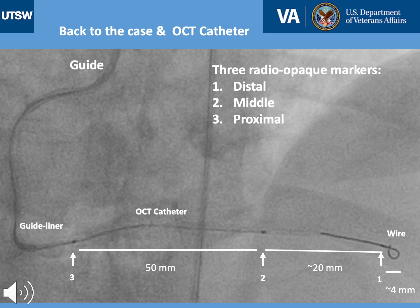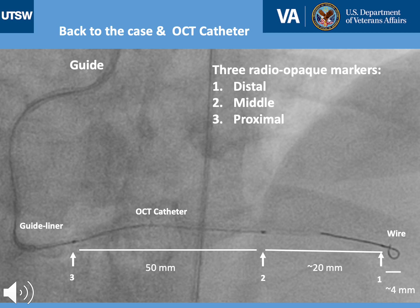Back to our patient: you can see the guide as the most proximal catheter, then the guide liner in the mid-distal RCA, and then the OCT catheter in the distal RCA into the PDA with the guidewire in the PDA. The three radiopaque markers are numbered 1, 2, 3 from distal to proximal. The distal marker is about 4 mm from the actual tip. The middle marker where the lens sits is about 20 mm from the first marker, placing it approximately 25 mm from the actual tip. The third proximal marker is about 50 mm from the second marker and typically marks the pullback length.